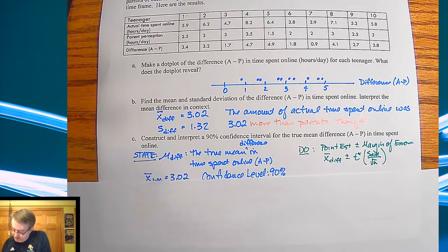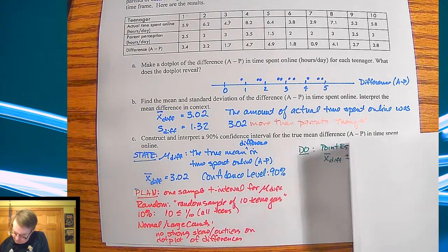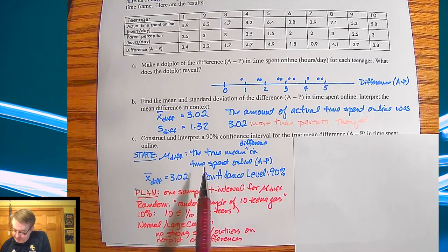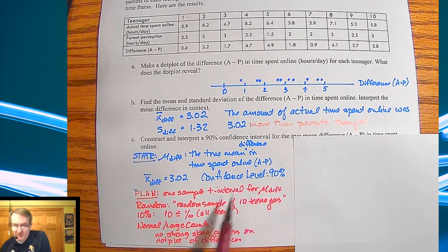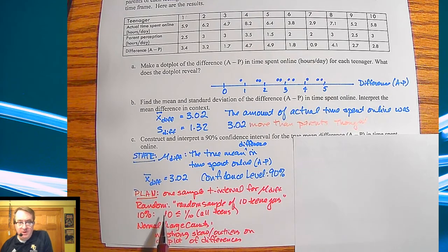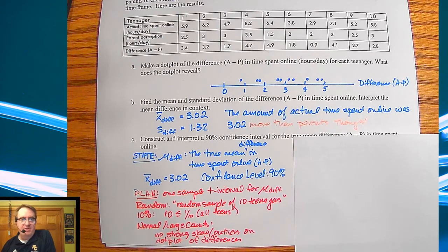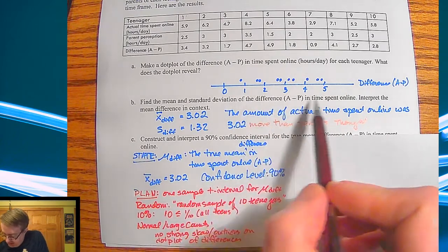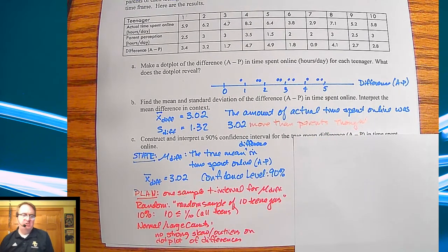Construct the confidence interval — here are your first two steps. Mu is the true mean difference in time spent online, A minus P. The confidence level is 90%. The plan is a one-sample T interval for the difference of means. Random: it says random sample of 10 teenagers. 10%: 10 is definitely less than one-tenth of all teenagers. For normal: we don't have large counts or n greater than 30, and it doesn't say the population is normal, so we check the dot plot — no strong outliers, so we're good.